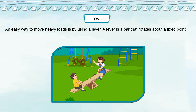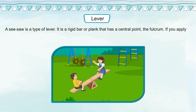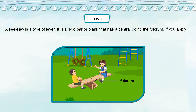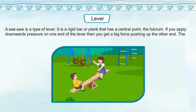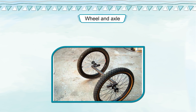Lever: An easy way to move heavy loads is by using a lever. A lever is a bar that rotates about a fixed point. A seesaw is a type of lever. It is a rigid bar or plank that has a central point called the fulcrum. If you apply downward pressure on one end of the lever, you get a big force pushing up the other end. The closer the load is to the fulcrum, the easier it is to lift it.